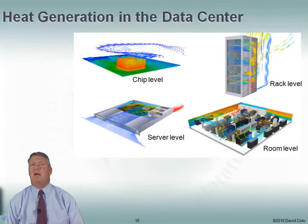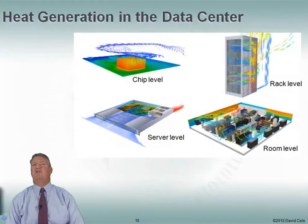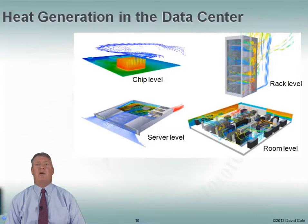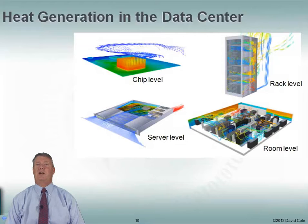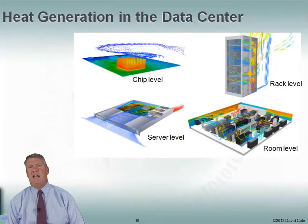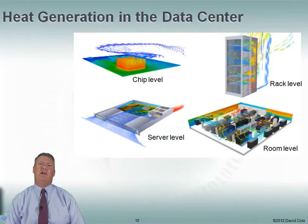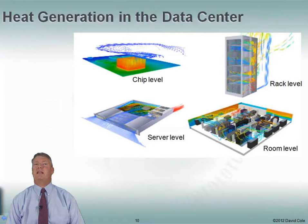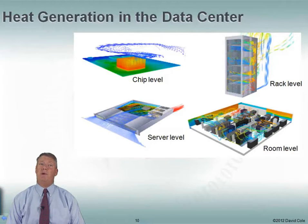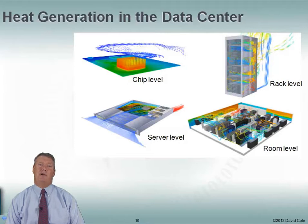Where is the heat generated in the data center? It all starts at the chip level. We put a bunch of transistors on a chip, cram more and more things onto it, and all of a sudden these chips start generating a lot of heat. Put a lot of chips into a server and now the server generates a lot of heat. Put a bunch of servers in a rack and now the rack is generating a lot of heat — in some cases as much as two or three pizza ovens worth. Then put a bunch of racks into a room and the entire room is generating heat. We've traditionally looked at cooling at the room level, but now we're starting to look at it at rack level and server level. There are even companies working with print technology to direct little blasts of liquid or air at the chip level to cool down an individual chip.